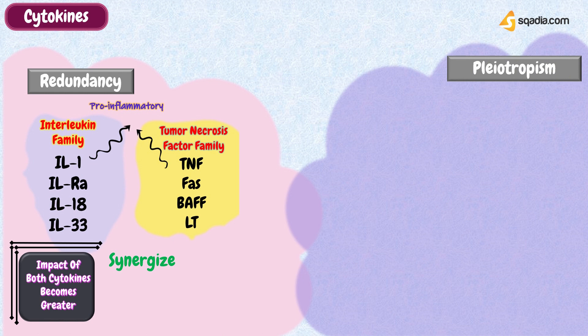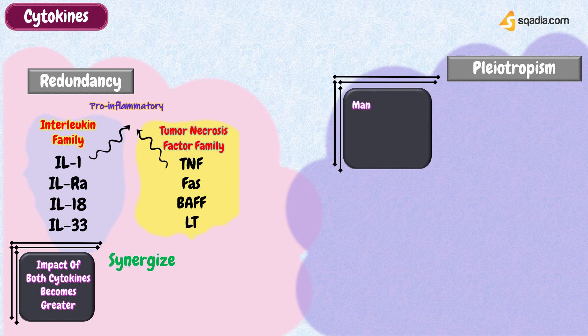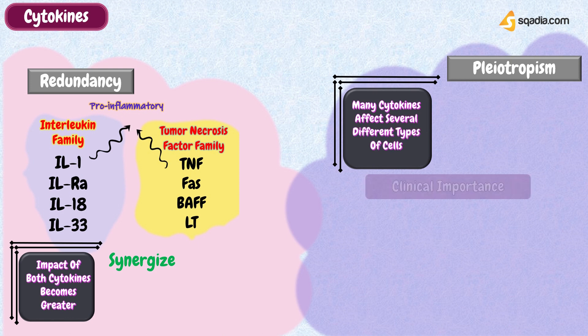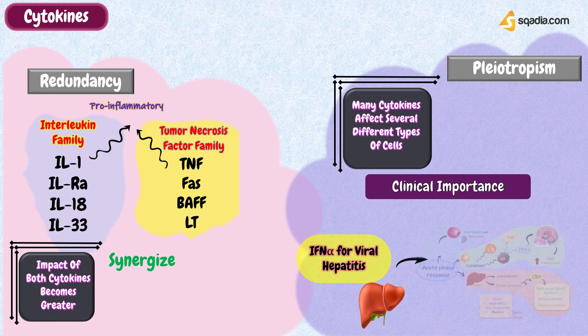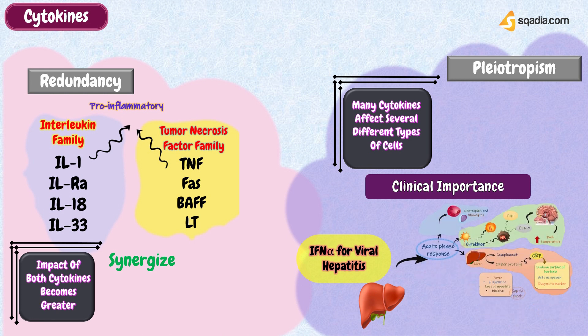Pleiotropism refers to the fact that many cytokines affect several different types of cells. This is also clinically important. The antiviral effects of interferon-alpha are used to treat hepatitis B virus infection, but interferon-alpha makes patients feel unwell because it induces an acute phase response.